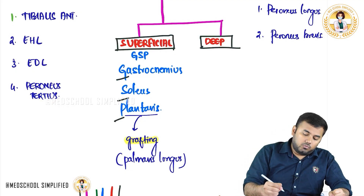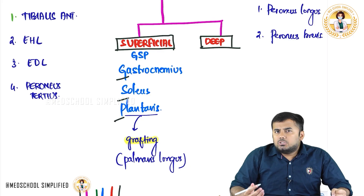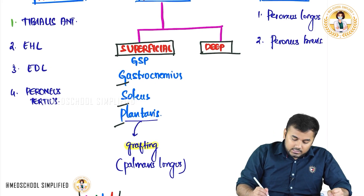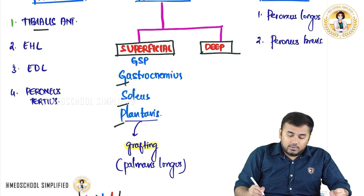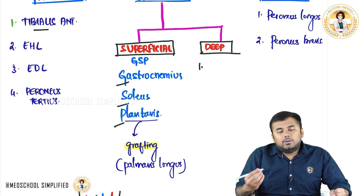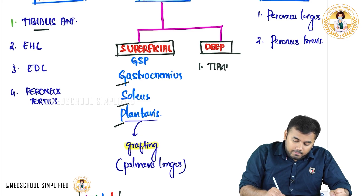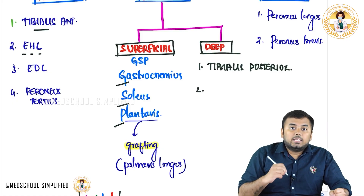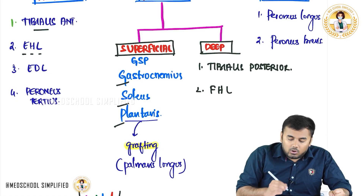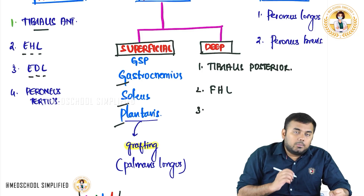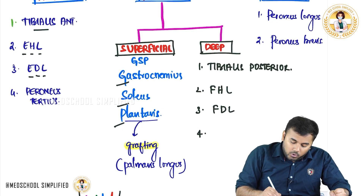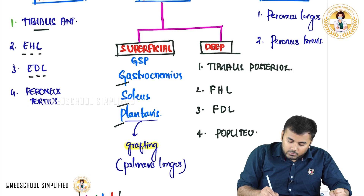For the deep posterior compartment muscles, think of the opposite of the anterior compartment. Tibialis anterior becomes tibialis posterior. Extensor hallucis longus becomes flexor hallucis longus. Extensor digitorum longus becomes flexor digitorum longus. The fourth deep muscle is popliteus.